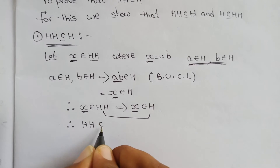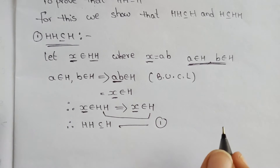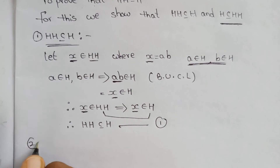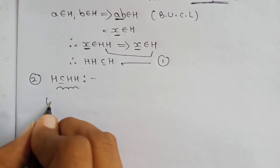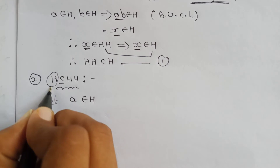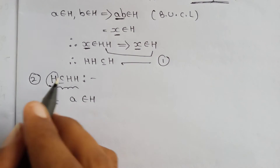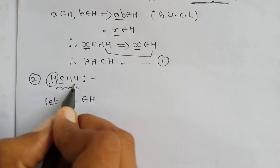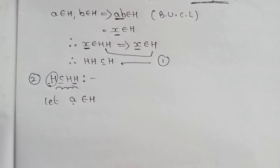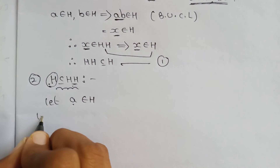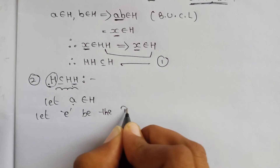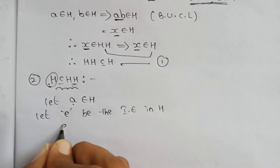Therefore, H·H is a subset of H. Next, we have to prove H is a subset of H·H. Let E be the identity element in H. Since H is a subgroup of G, E belongs to H.